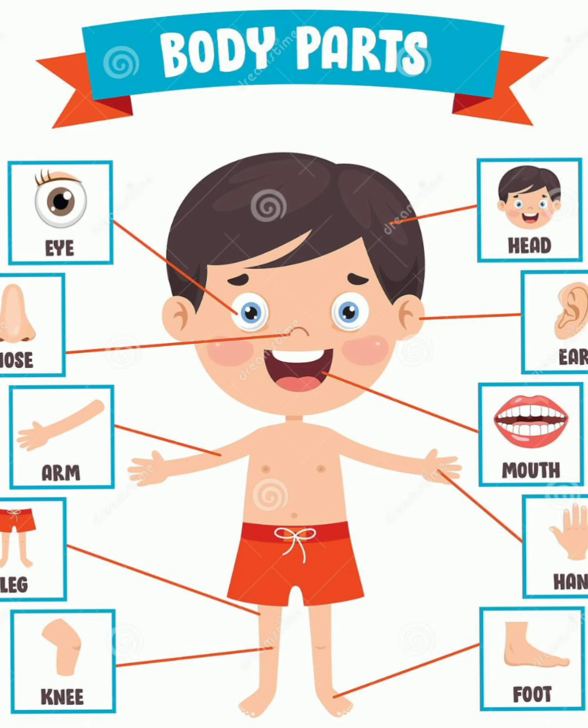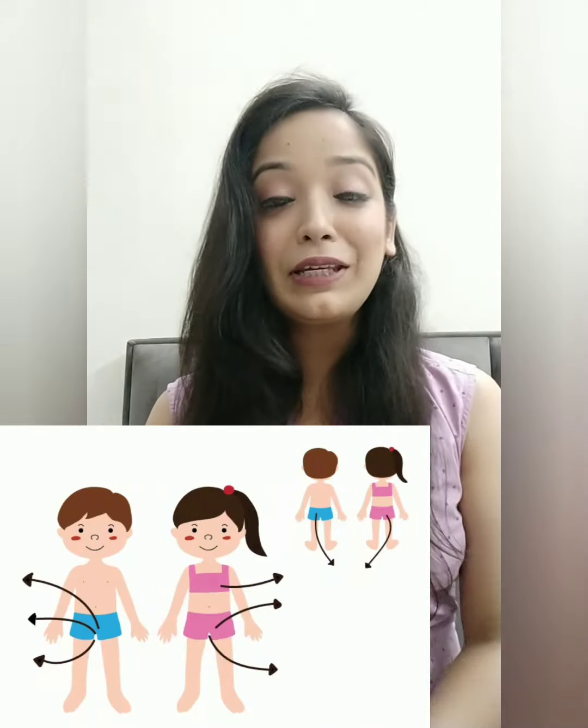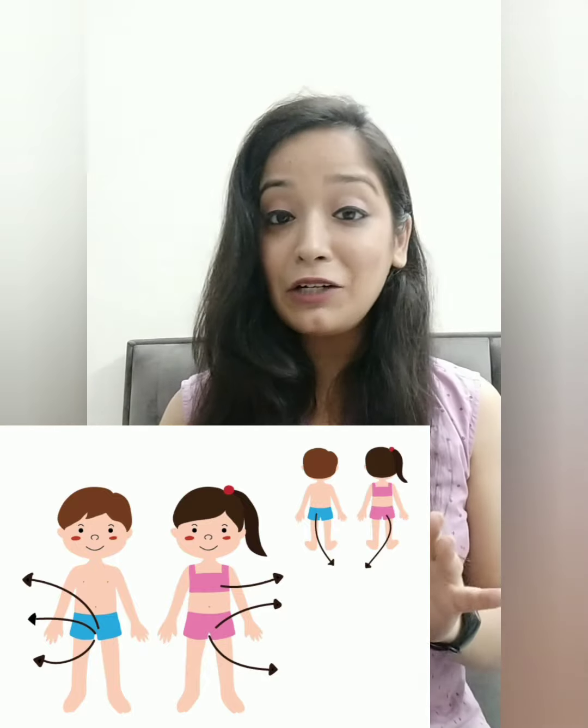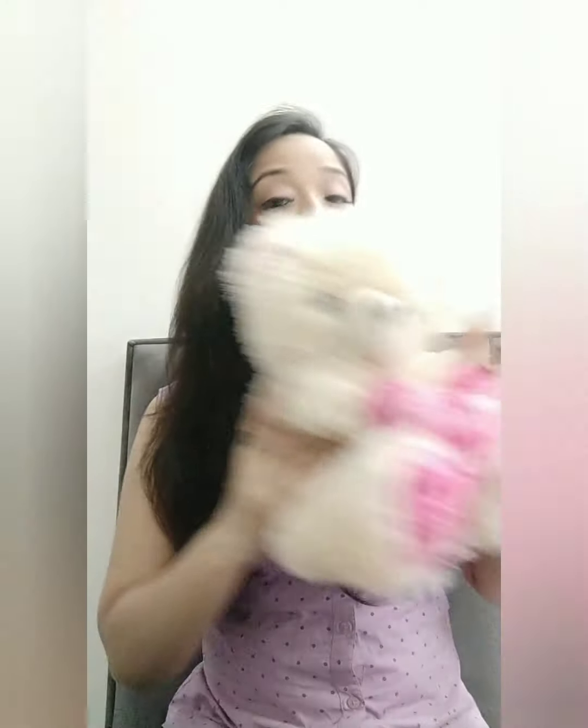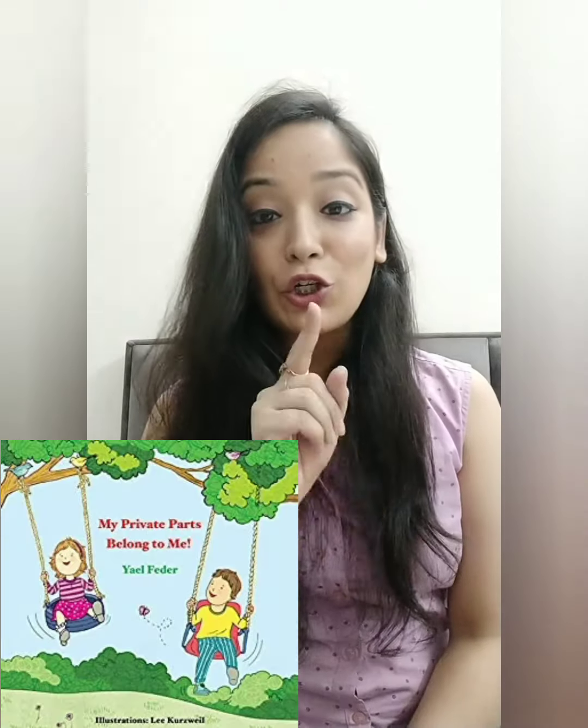You know that there are some body parts that are visible — things you can see, like your face, arms, and legs. But there are also some parts that are not visible, that are covered, and we call them private parts. Look at this image carefully — the highlighted parts are the private parts: the area between the legs, the chest, and the buttocks. These are your private parts and they are always covered.